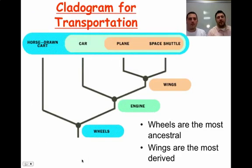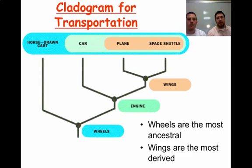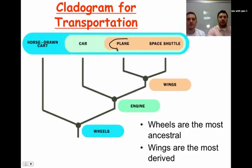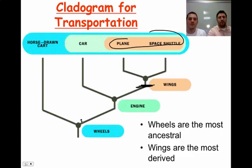Taking another example from everyday life — looking at transportation and making a cladogram of that — wheels would be the most ancestral trait because all of those types of transportation have wheels. Wings would be considered the most derived, because only the plane and the space shuttle have wings. Everything from a certain point up has an engine, and everything from here up has wheels.